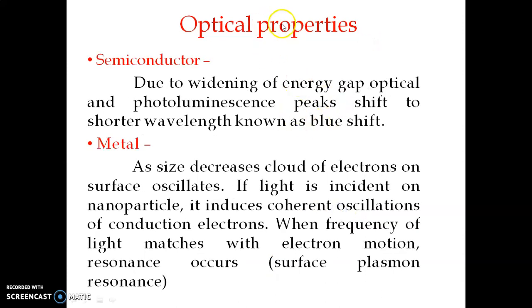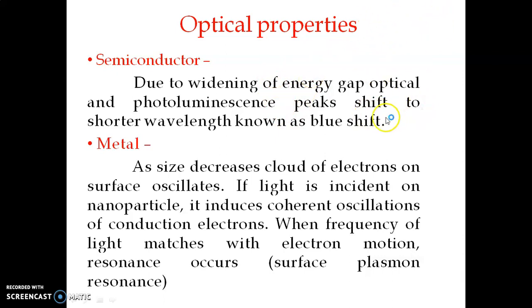The next property is optical properties, which we study separately for semiconductors and metals. For semiconductors, we have seen there is a widening of the energy gap at nanoscale. Due to this widening, the absorption peak is shifted to a shorter wavelength or higher frequency side. The energy equal to the band gap is absorbed, so the absorption peak maximum occurs when the incident light energy equals the band gap. This shift to the blue side is called a blue shift.